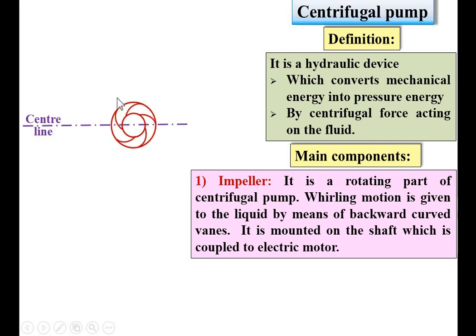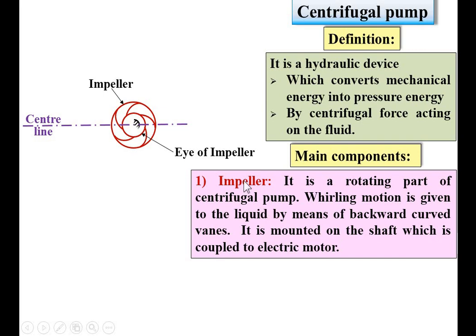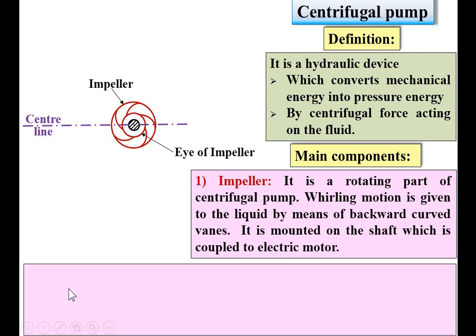I will give the name — this is the impeller. It is mounted on the shaft which is coupled to the electric motor. This is labeled as the eye of impeller, and this is the shaft connected to the electric motor.